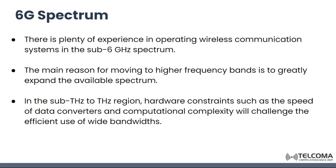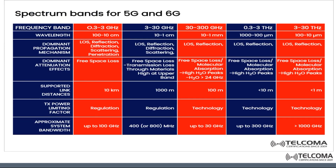There is plenty of experience in the sub-6 GHz spectrum. The main reason for moving to higher frequencies is greatly expanded capacity. Hardware constraints like speed and complexity will challenge this. We can see here the spectrum band for 6G and 5G with their wavelength, dominant propagation mechanism, attenuation effects, supported downlink distances, transmitter power, and system bandwidth across all frequency ranges.